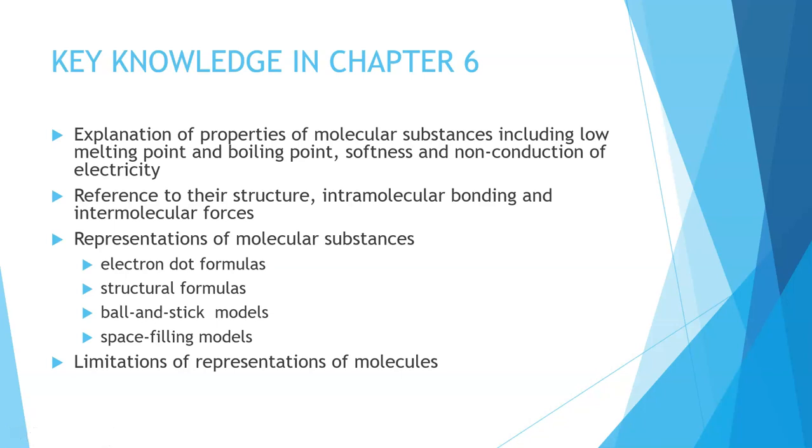This comes from Chapter 6 in your textbook, and essentially these are the key things that you need to be able to do by the end of this unit. You want to be able to explain the properties of molecular substances and contrast these with your ionic and metallic bonding, so reference to their structure in terms of both intra- and intermolecular forces, which we will go through. And understand the different ways that we can represent molecular structures.